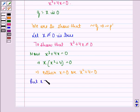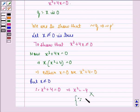But X is not equal to 0, therefore X² plus 4 equals 0. So this implies that X² equals minus 4, which is not possible because X is a real number.